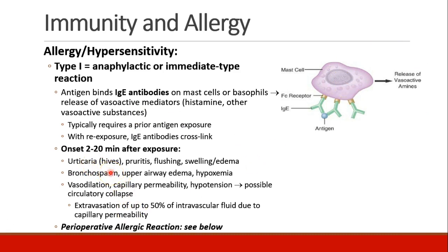Signs include urticaria (hives), pruritus (itching), flushing, swelling, and edema. Bronchospasm and upper airway edema can cause hypoxemia. The vasodilation and capillary permeability can lead to hypotension and even possible circulatory collapse. Bear in mind that patients who have anaphylaxis could extravasate as much as 50% of their intravascular fluid into the extravascular space, because of the capillary permeability caused by vasoactive mediators in the mast cells or basophils.